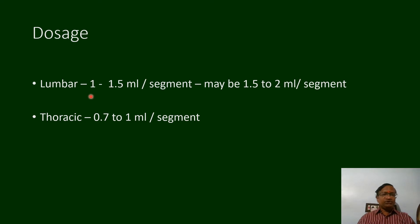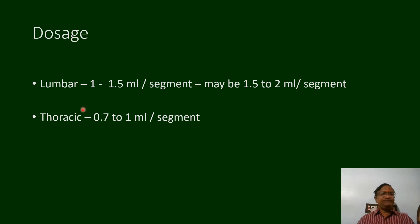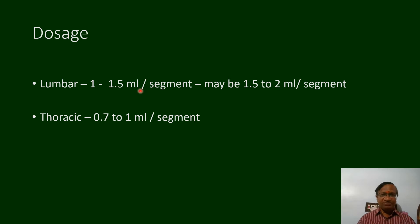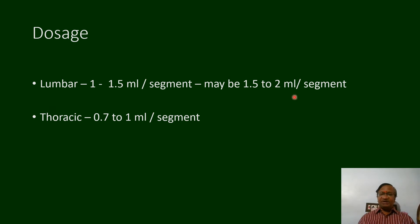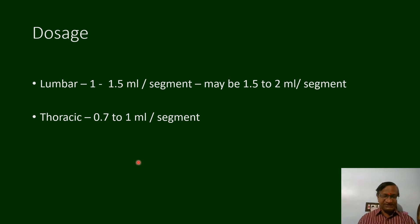Now, what dose do we need to top up? For a lumbar epidural we need to give 1.5 ml per segment; for caudal we need 2 ml per segment; and for thoracic we need 0.7 ml per segment.